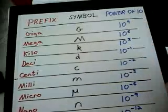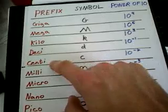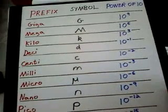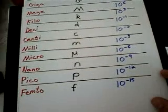Notice you have some of the more common ones like kilo, centi, milli, micro, nano - you're probably familiar with these. Some of them you're probably a little less familiar with, but that's okay.